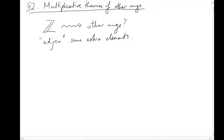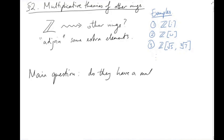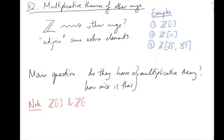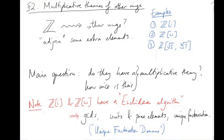There are many other examples — for instance, throwing in the square root of 5 and the cube root of 7 — and generally these rings can be quite nasty. The main question we'll be asking is: do these rings have a multiplicative theory, and if so how nice is it? Z[i] and Z[ω] are particularly nice because they also have a sort of Euclidean algorithm, just like Z. This implies we can borrow the same ideas: greatest common divisors, units and prime elements, and unique factorization. So Z[i] and Z[ω] are unique factorization domains.